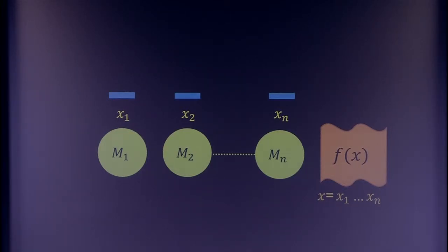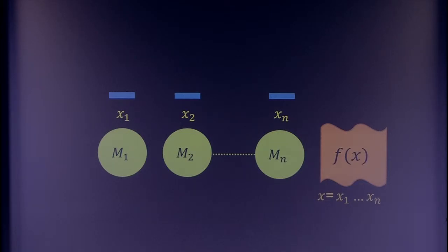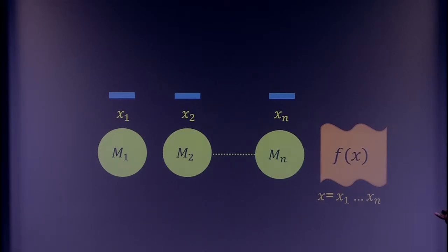A streaming algorithm doesn't see its whole input at once — the inputs arrive in an online fashion. For some part of the input x1, the streaming algorithm computes something and stores it in memory. The next part arrives and the algorithm computes something else based on its previous memory state and this input. This process goes on until it sees the whole input and computes some function. Throughout this talk I'll assume inputs come from some joint distribution on x1 to xn, and algorithms may be randomized.